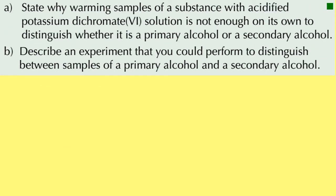Here's another question. Part A asks why warming samples of a substance with acidified potassium dichromate solution is not enough on its own to distinguish whether it is a primary alcohol or a secondary alcohol. That's because both primary and secondary alcohols are both going to turn potassium dichromate green from its original orange colour — so that doesn't distinguish them.